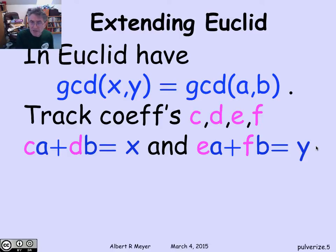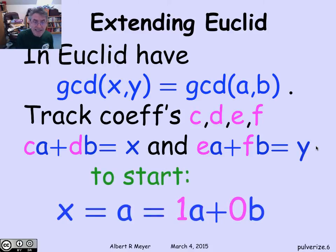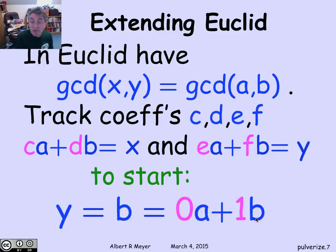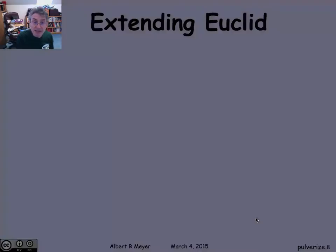How do we get initial values for c, d, e, and f? Well, that's easy. At the start, x is a, and so c is 1 and d is 0, because a is 1a + 0b. Similarly, y is 0a + 1b. So we know what these values of c, d, e, and f are at the start of the algorithm. The question is, how do we update them?